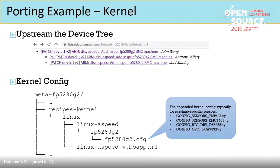Next step is the kernel. We need a kernel device tree and to add kernel configs. For the device tree, INSPA sent the whole device tree upstream, and Joey helped merge it — which is great because it's hard for a team new to kernel development to contribute upstream. The kernel configs add some new settings on top of the default OpenBMC config, especially sensor configs: we added two sensor configs, an RTC driver, and a GPIO driver, specific to the Dubai machine.